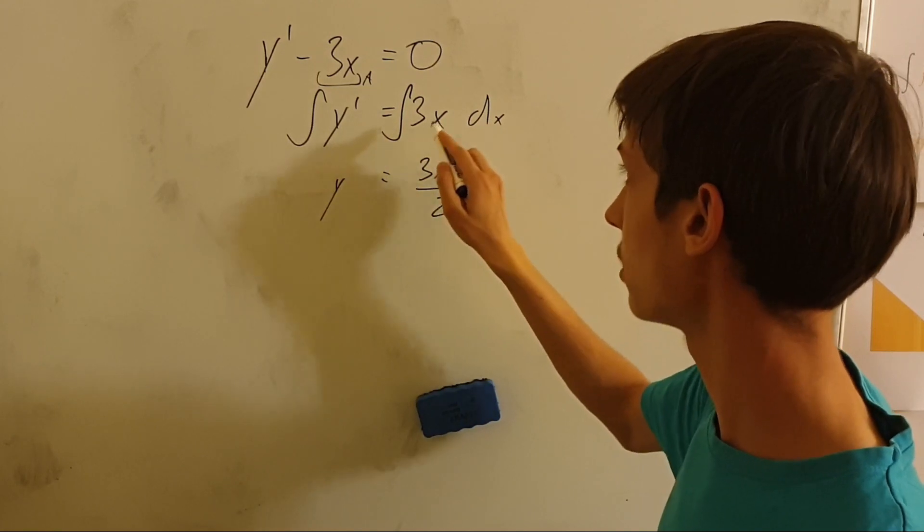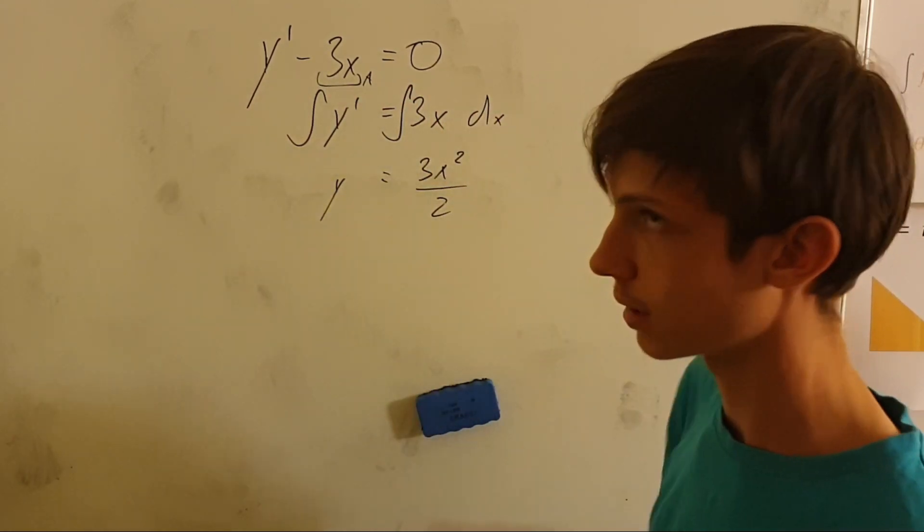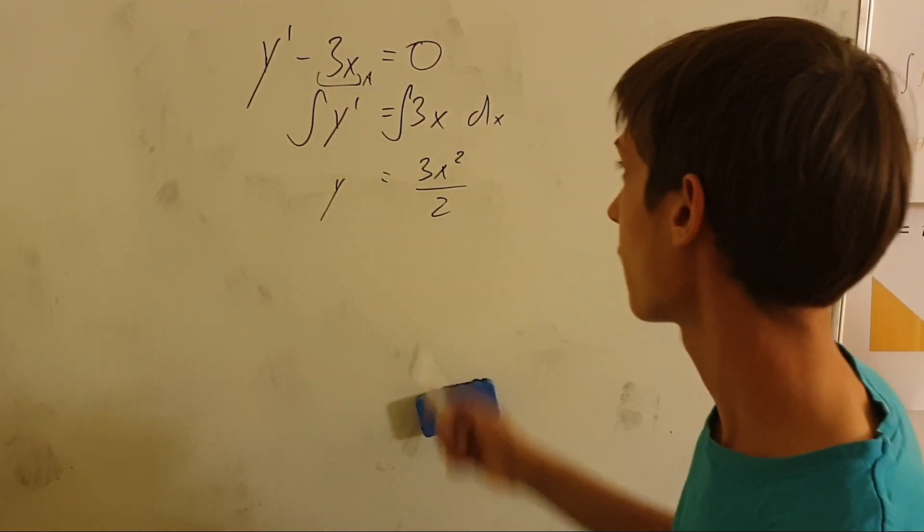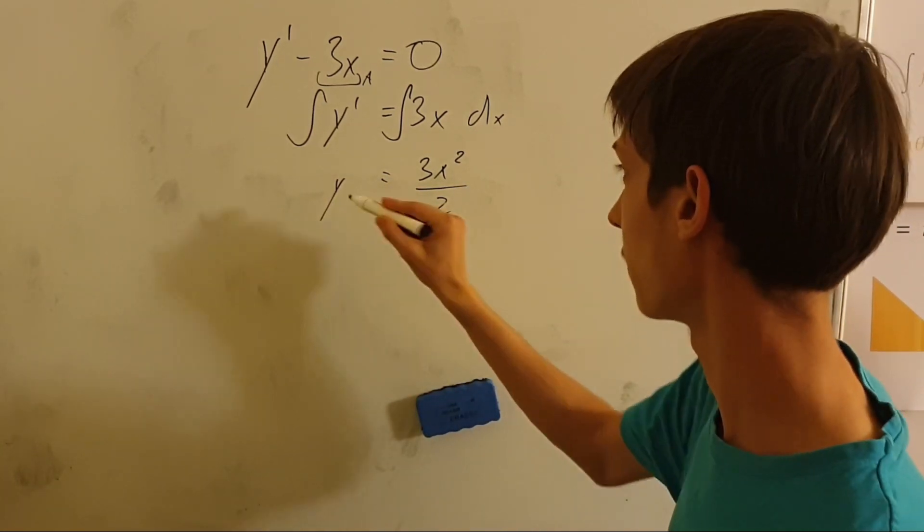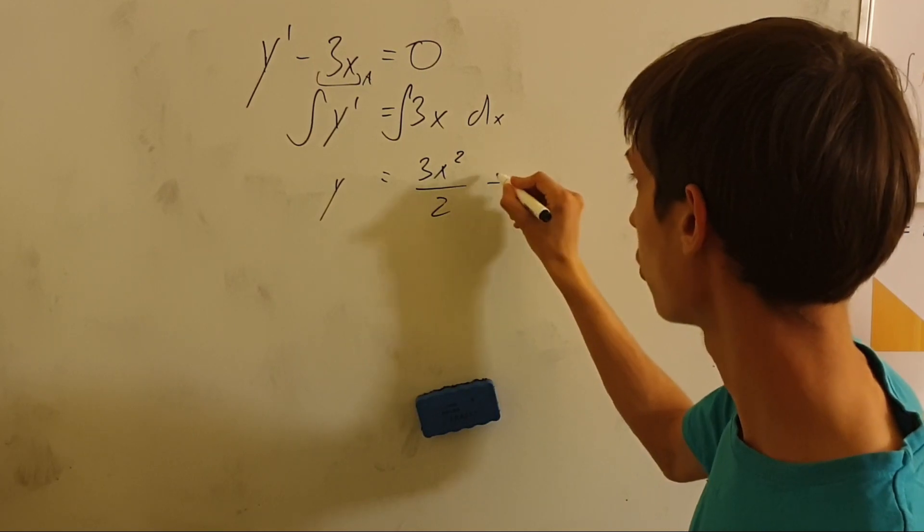That's what we got. And on the right side, the integral of whatever was taken to the right side - that was 3x, right? And the integral of 3x is 3x squared over 2. So that's our result here. You might also want to add c.